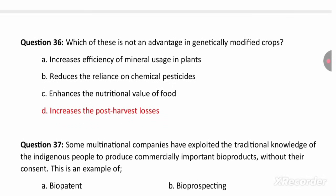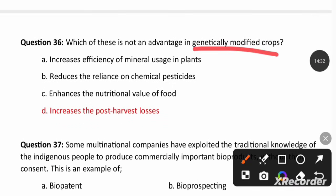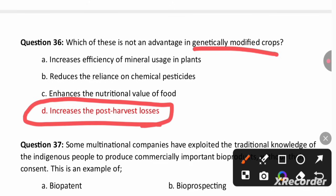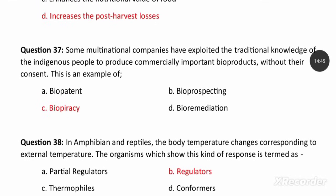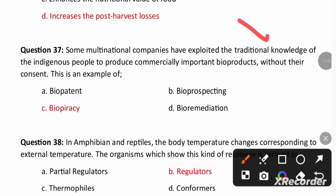Which of the following is not an advantage of genetically modified crops? The answer is increased post-harvesting losses, because genetically modified crops basically decrease post-harvesting losses. Some multinational companies have exploited the traditional knowledge of indigenous people to produce commercially important bioproducts without compensation or consent — that is called biopiracy.